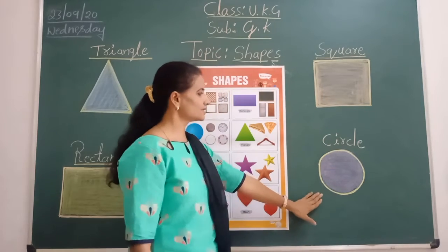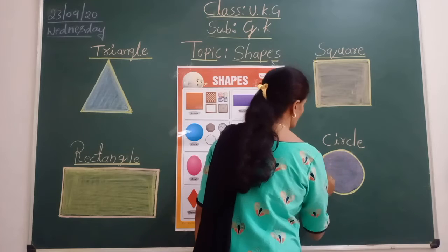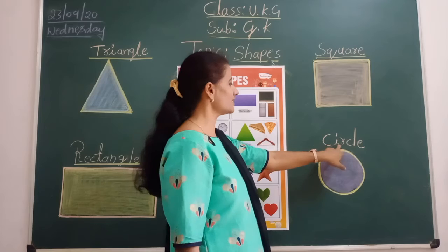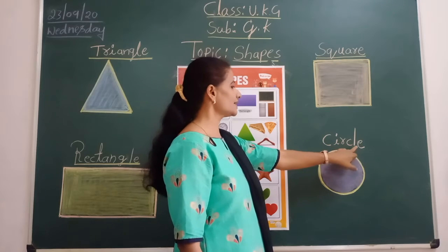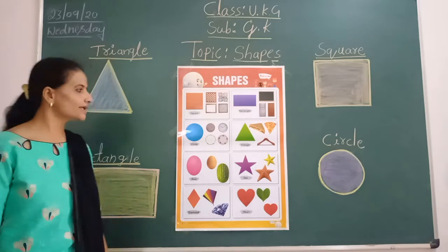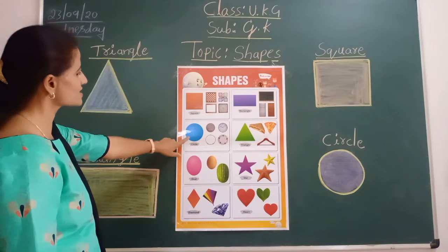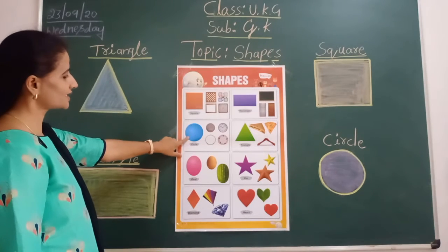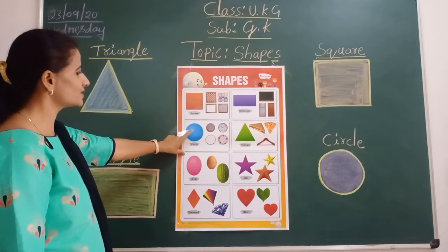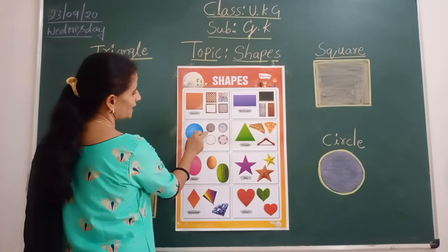Next, circle. See here — how many sides? No sides. Circle. What is the spelling of circle? C-I-R-C-L-E. We will see in the chart — circle, where it was? Here. Which color in this chart for circle? Blue color. See here — what is this picture? Coin, money. That also circle.